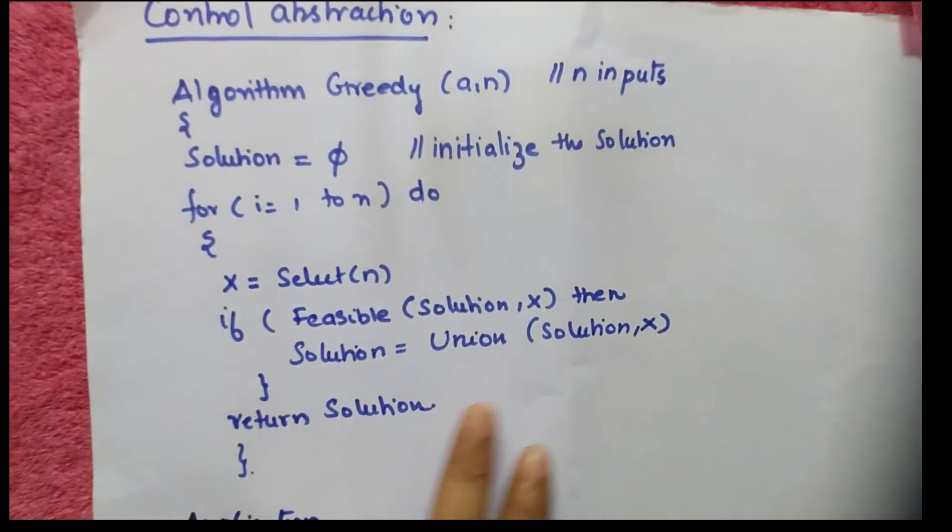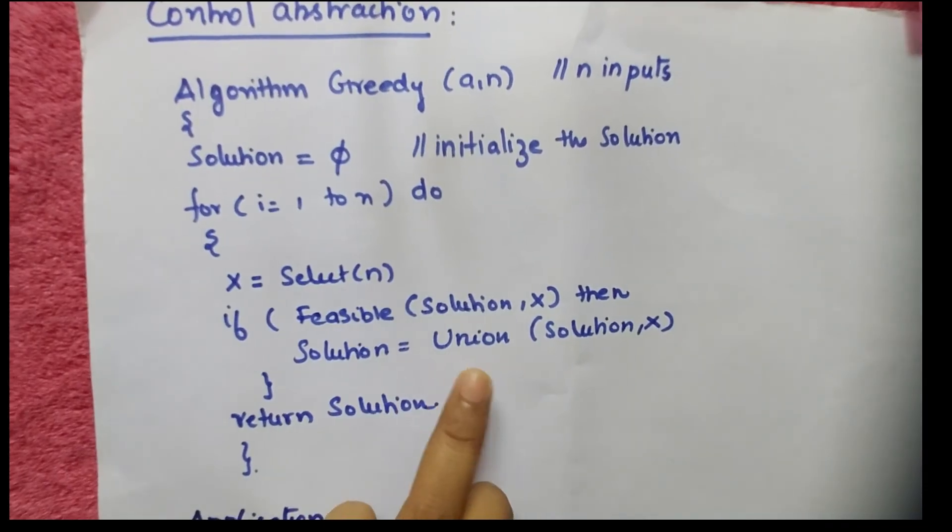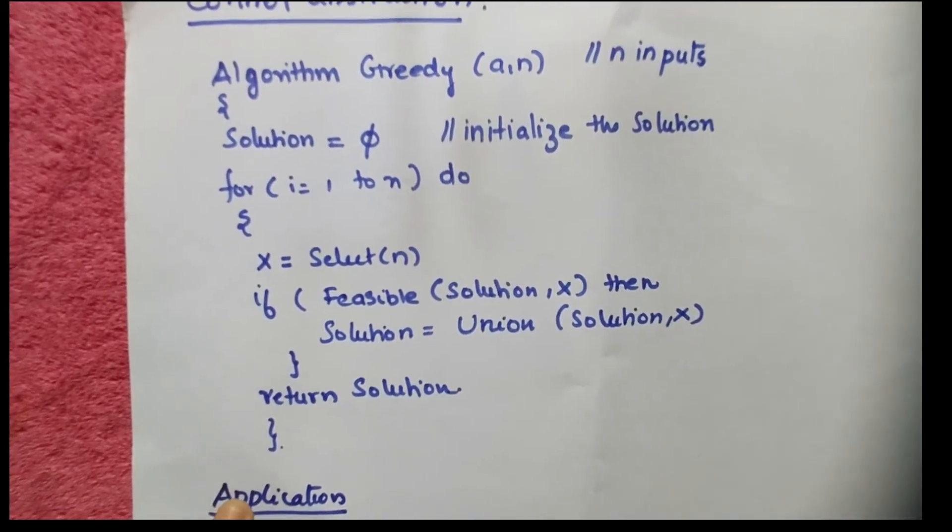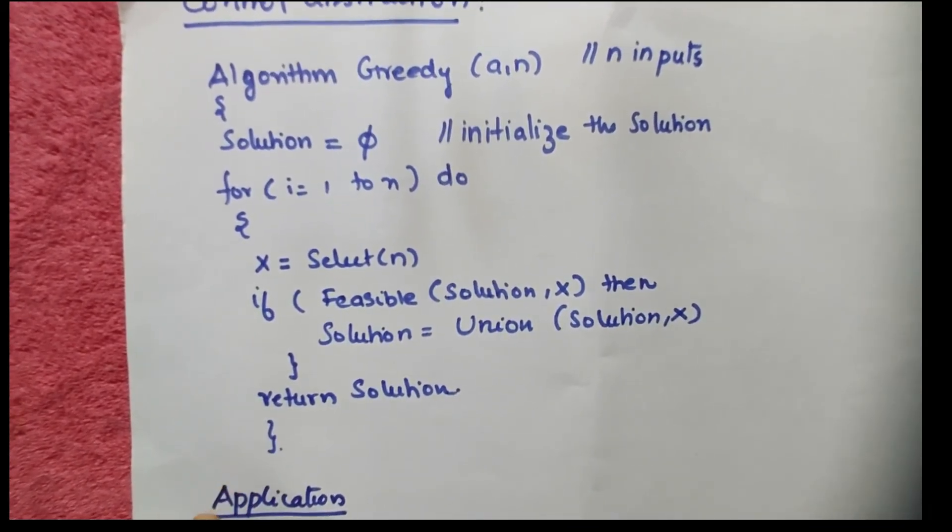The optimal solution is found by solution equals union of solution and x. After that you got a feasible solution, you will return the solution.